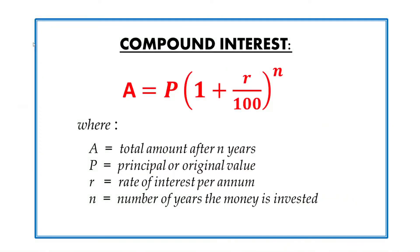Now, let us look at the compounding formula and its components. This formula contains four different components. A is the final amount after completion of investment of the desired number of years. P is the principal or the original amount invested. R is the rate of interest offered by the investment per year. And finally, N is the number of years for which the money is invested.